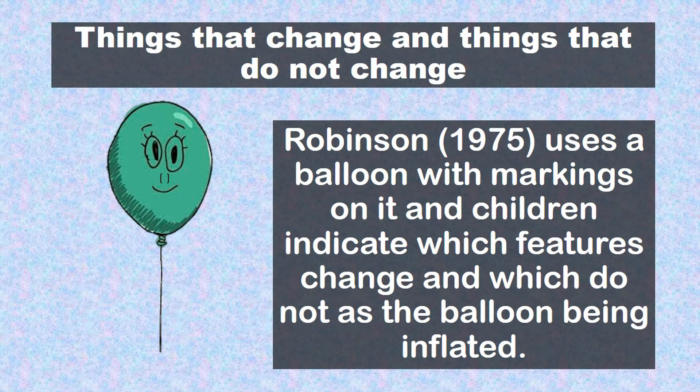In connection with that, we have here the subtopic things that change and things that do not change. According to Robinson 1975, he uses a balloon with markings on it and children indicate which features change and which do not as the balloon is being inflated. A round balloon with a face exemplifies properties that do not change when the balloon is inflated, such as something inside something, like the eyes in the face.